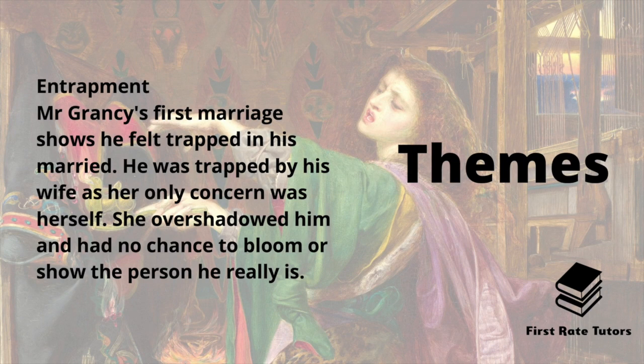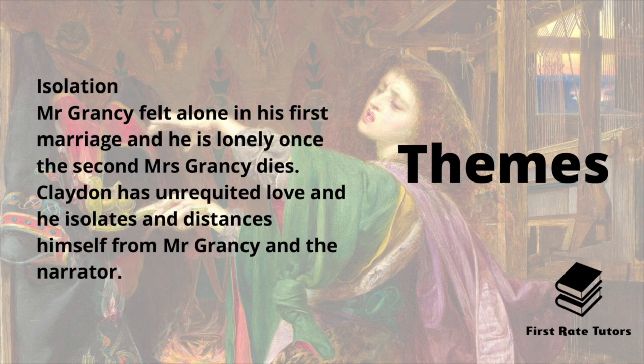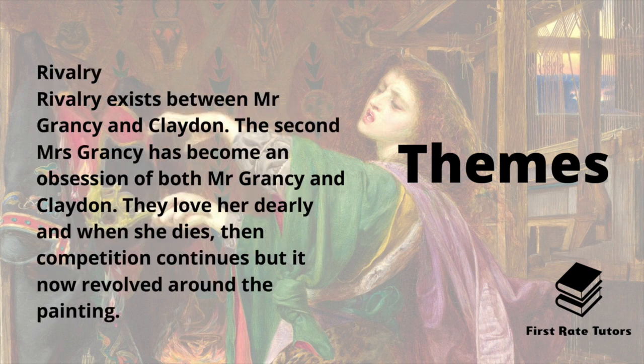The first theme is entrapment. Mr. Grancy's first marriage shows he felt trapped — his wife's only concern was herself, she overshadowed him, and he had no chance to bloom or show who he really was. The second theme is isolation. Mr. Grancy felt really alone in his first marriage and is lonely once the second Mrs. Grancy dies. Isolation also applies to Claydon himself, as he has unrequited love and distances himself from Mr. Grancy and the narrator as a result.